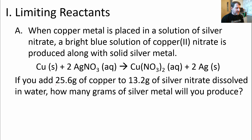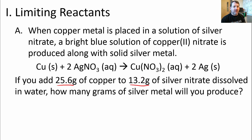It's possible that this amount of copper exactly uses up this amount of silver nitrate, but the likelihood that if you randomly throw the two things together they perfectly use each other up is going to be pretty unusual. So we need to figure out which of these runs out first — the copper or the silver nitrate — and then how much stuff we can produce based on those numbers.